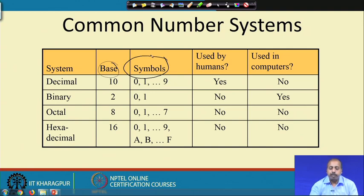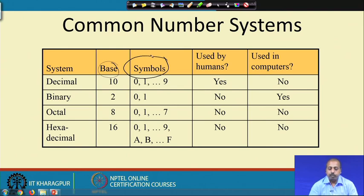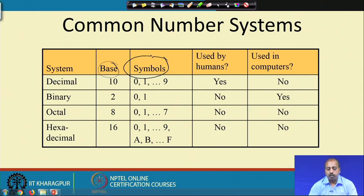There is a value associated with each symbol. The convention we follow is that in a decimal number system, 0 represents the integer value 0, 1 represents integer value 1, and similarly 9 represents integer value 9. In a binary number system the base is 2, with symbols 0 and 1, where 0 represents integer value 0 and 1 represents integer value 1. In an octal number system the base is 8 and there are 8 symbols, 0 to 7.